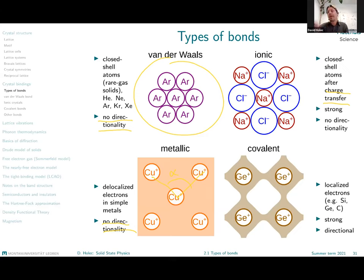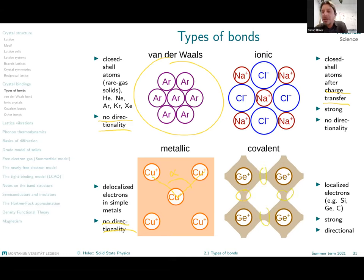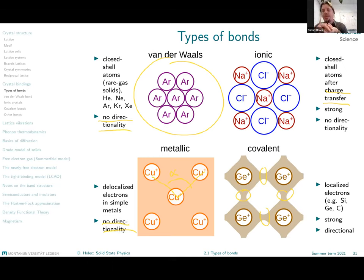The final type shown here is covalent bonds. Covalent bonds are typically based on sharing electrons, but not in the metallic manner where they become very delocalized. Instead, they become fairly localized in so-called molecular orbitals, localized typically between the positively charged ions, creating a network of bonds. These bonds are extremely directional — apart from being very strong, they are very difficult to bend. Hence, covalently bonded materials are typically fairly brittle — strong, but brittle. Examples include semiconductors or ceramic materials where covalent bonds are quite important.